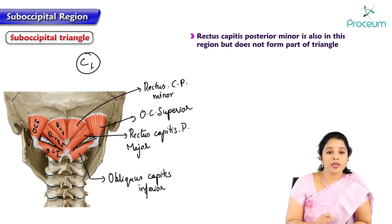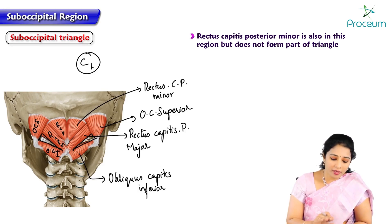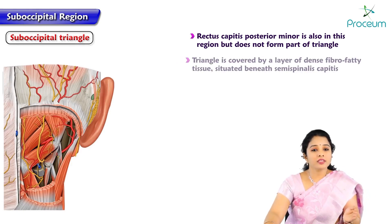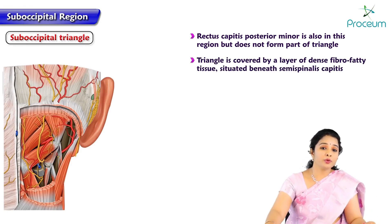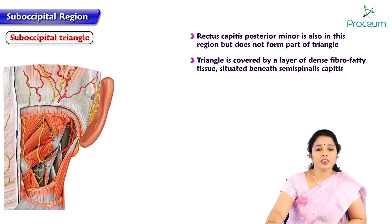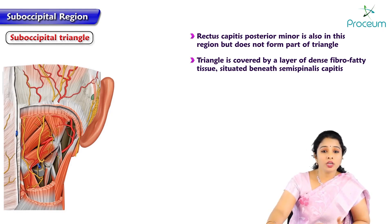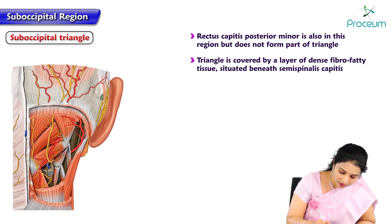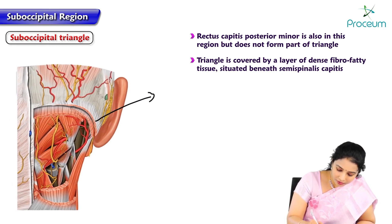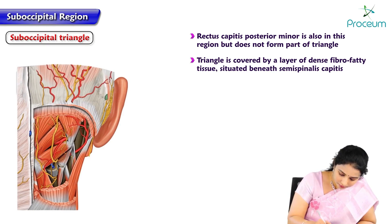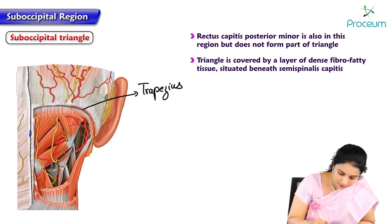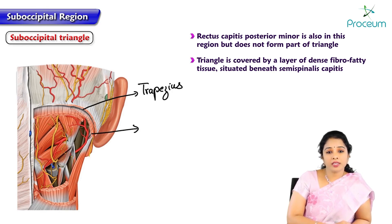The triangle is covered by a layer of fibro-fatty tissue and many muscles which form the roof of the triangle. The triangle is covered by a layer of dense fibro-fatty tissue. Here the fibro-fatty tissue is removed, which lies deep to the semispinalis capitis muscle. The first muscle removed is trapezius in the neck — this is the cut part of trapezius. Deep to trapezius is the semispinalis capitis muscle.